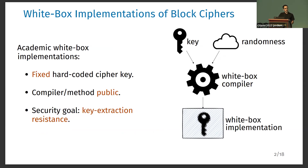White box implementations are software implementations designed to prevent white box attacks. In academia, most implementations are fixed-key implementations, meaning that the key of the cipher is hidden and hard-coded in the implementation and is not an input of it. To build a fixed implementation, you need a white box compiler that takes the key of the cipher and some initial randomness, and produces the white box implementation. In academia, all white box implementations of block ciphers have a method that is public, but some commercial implementations have a method that is not known and rely on secrecy of the compiler for security. In this work, we only focus on academic implementations where the method is public.